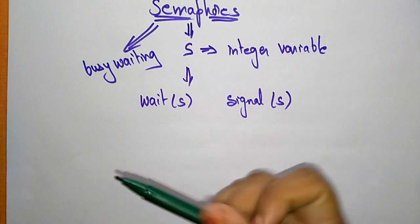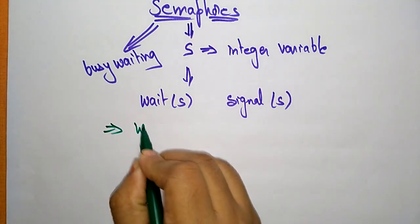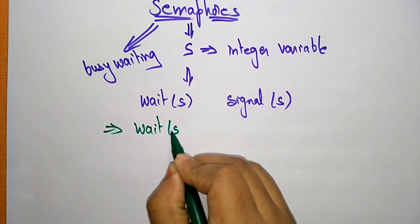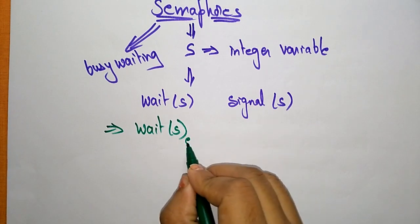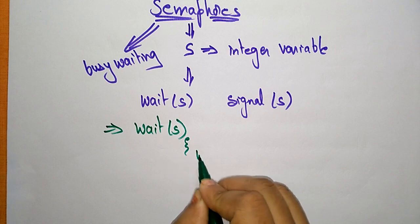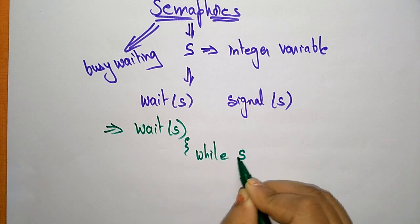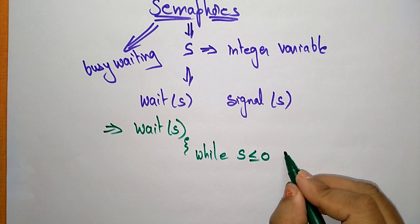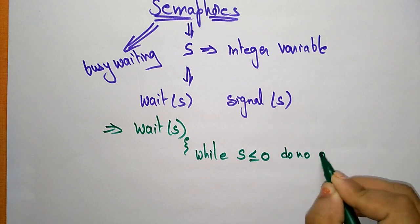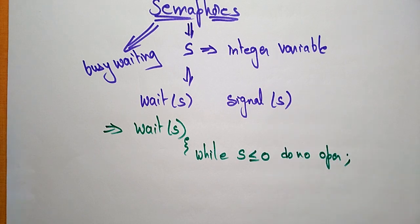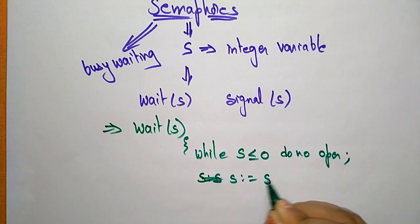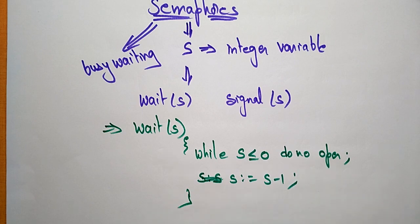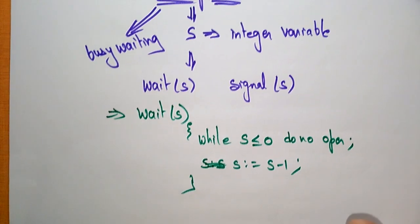First, what does wait do? Whenever you call wait(S), it enters into a while loop: while S is less than or equal to 0, do no operation (semicolon). Then S has to be decremented: S equals S minus 1. This is the code for the wait operation.